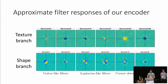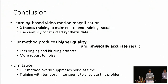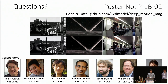To understand what our network has learned, we approximate the encoder response as a linear filter. The texture filters look like blurring kernels, while the shape filters show a variety of derivative filters including higher-order ones, consistent with our understanding of motion detection. To conclude, we presented a learning-based video motion magnification method using two-frame training with synthetic data. Our method produces higher quality, physically accurate results with less ringing and blurring artifacts and greater noise robustness. It can sometimes overly suppress noise and small motion, but training with temporal filters seems to alleviate this problem. Please visit our poster number two; code and dataset are available online.